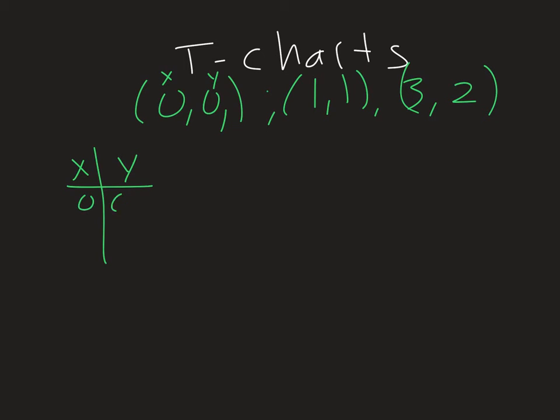So we have 0, 0, 1, 1, and then 3, 2. And that just kind of gives us a quick idea of how it matches up. Now in each of these, or in this column, I don't have any repeats. That's a good indicator that this is a function. Every time I plug in a 3, I get a 2. Every time I plug in a 1, I get a 1. Every time I plug in a 0, I get a 0.